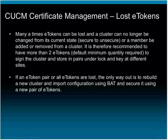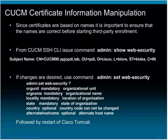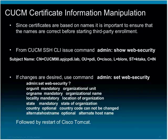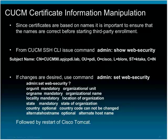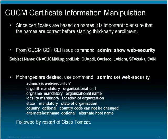You can also manipulate certificate information via the CLI. For example, if you want to generate a Tomcat certificate request but are unsure whether the common name was set up correctly during installation, go to the OS CLI and issue the command 'show web security', which illustrates all information associated with the certificate. To set a specific parameter, use the command 'set web security', allowing you to update fields such as the state. Once done, restart the Tomcat service using 'utils service restart Cisco Tomcat', otherwise the change will not be applied since Tomcat will be reading from cache.